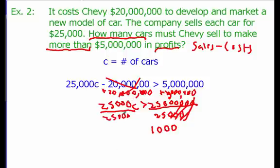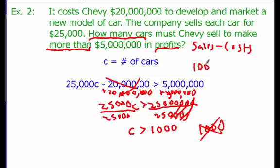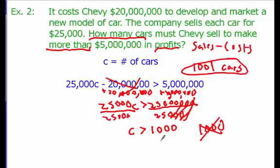Since this is a positive divisor, the sign doesn't change. We get C > 1,000. However, the answer is not 1,000 — we need the smallest number greater than 1,000. Since the company can't sell half a car, the answer is 1,001 cars. If Chevy sells 1,001 cars, their profit will be greater than $5,000,000 — specifically $5,025,000. Since C must be strictly greater than 1,000, the answer must be 1,001.